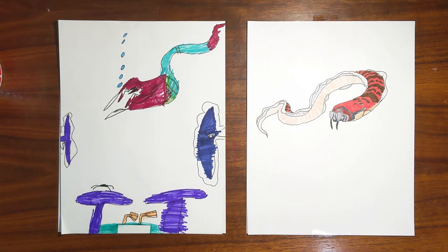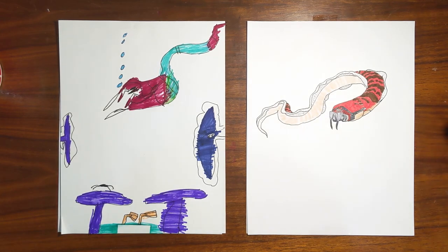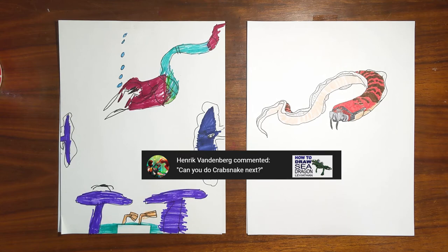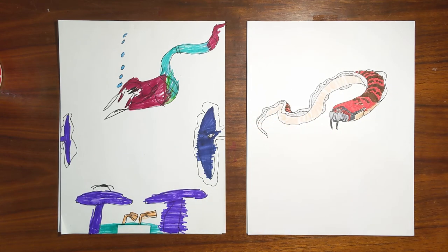All right, and there you have it, folks. Crabsnake! Thank you to Henrik Vandenberg for suggesting that. Thank you, thank you, thank you. Wait, that wasn't a joke, though. Oh, boy. Rim shot Maxie.